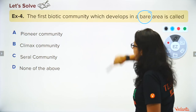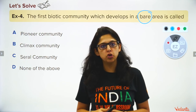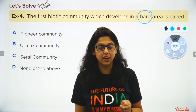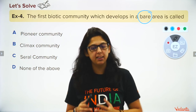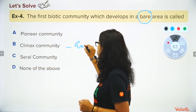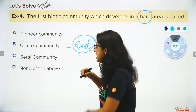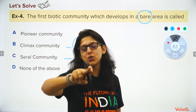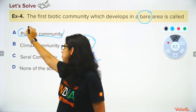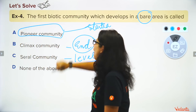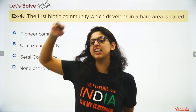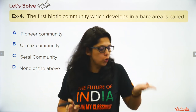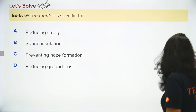The first biotic community that develops in a bare area — like a volcanic erupted area, a deforested area, or after a cyclone — is called the pioneer community. The final stage is the climax community. Between pioneer and climax, there are intermediate stages called seral levels.